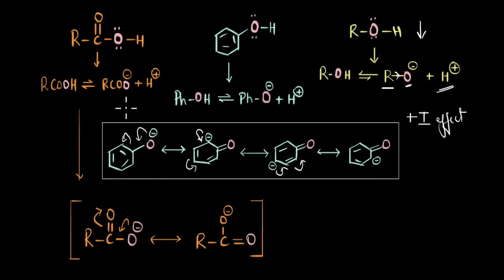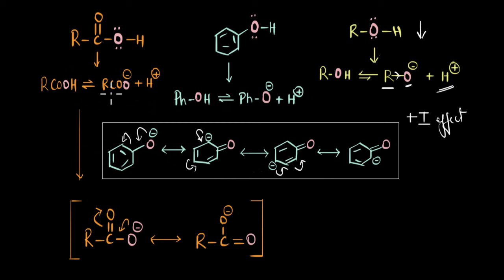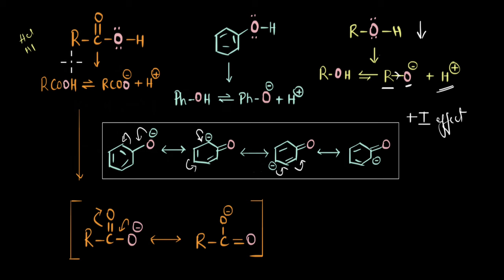An important thing to note is that even though the carboxylate ion is resonance stabilized, carboxylic acid is still a weak acid. At equilibrium, you will still find more of the undissociated acid form rather than the dissociated carboxylate ion form. This is why, even though carboxylic acid is the most acidic among the organic compounds mentioned here, it is still considered only moderately acidic when compared to strong acids like HCl or HI that undergo complete dissociation.